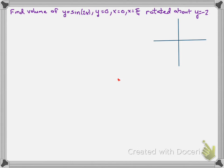We're going to find the region enclosed by sine of 2x, y equals 0, x equals 0, and x equals pi over 4.